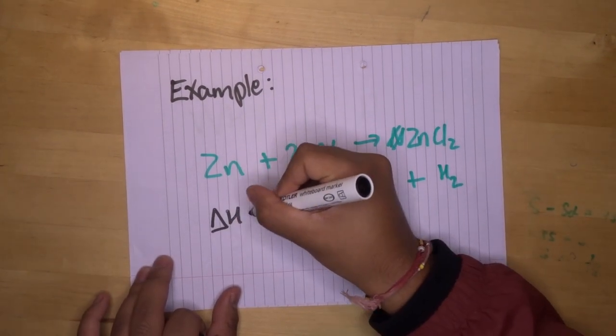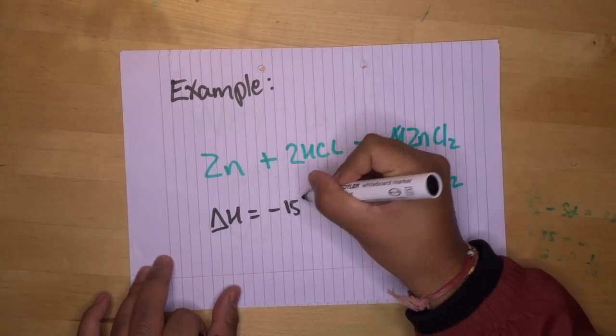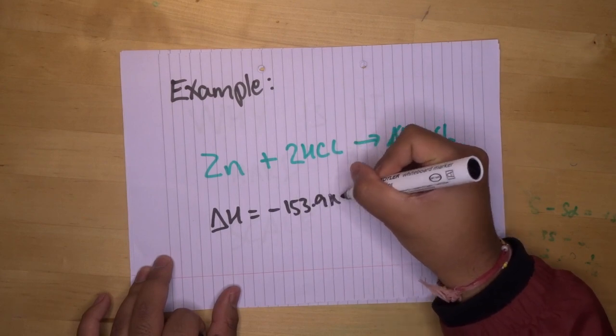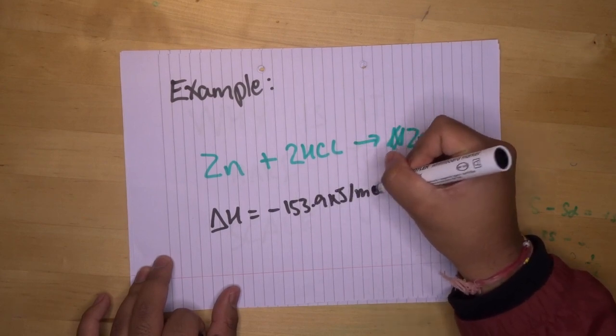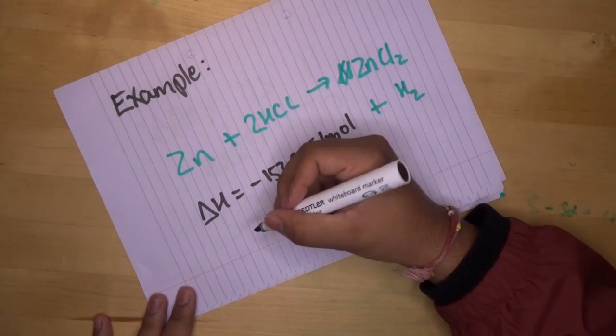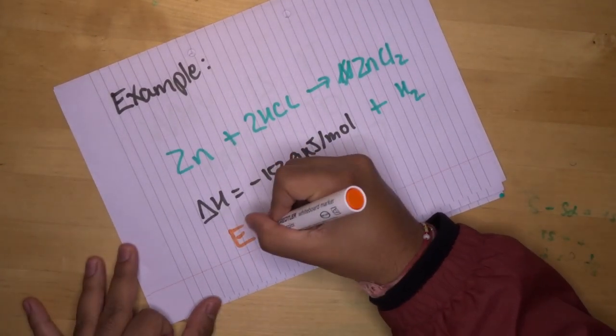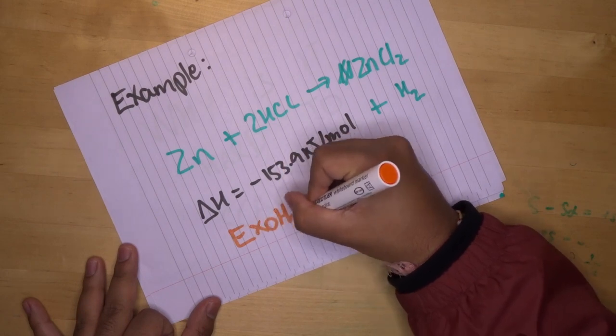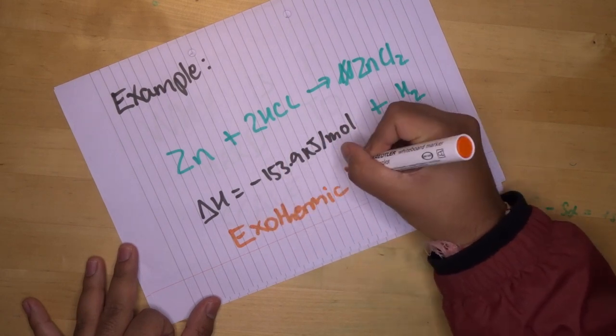The enthalpy of this reaction is 153.9 kilojoules per mole, which means that 153 kilojoules of heat is released every time one mole of ZnCl2 is formed. And this means that this reaction is exothermic.